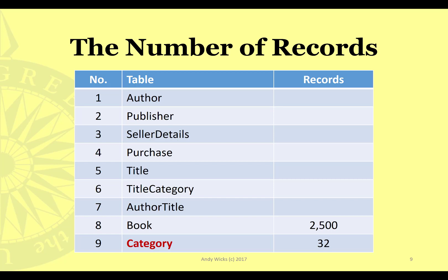Then we look at the things that link to that. The next thing we need to look at is the number of titles. A title is a unique title of a book — for example, the Order of the Phoenix — and there may be several copies of the Order of the Phoenix. So the number of books has to be greater than the number of titles. If we've got 2,500 books, I'm going to assume 1,500 titles.